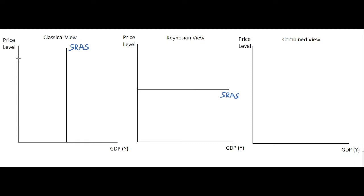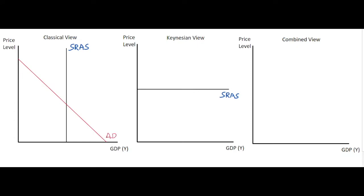What we will do here is draw in an aggregate demand curve for both the classical view and the Keynesian view. Here we have a downward-sloping aggregate demand curve giving us an equilibrium point — point A — where aggregate demand is equal to aggregate supply, and at that level we have the price level and the GDP level in the economy.